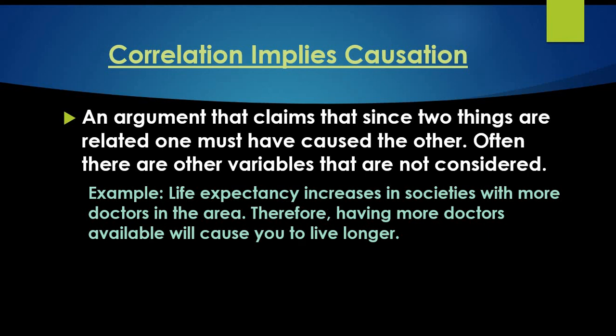A lot of times when people find a relationship between two things, they think that one causes the other. But the only way you can truly find out if something causes something else is through a randomized controlled experiment. You can't just look at a relationship and say there's a relationship, therefore one must have caused the other.